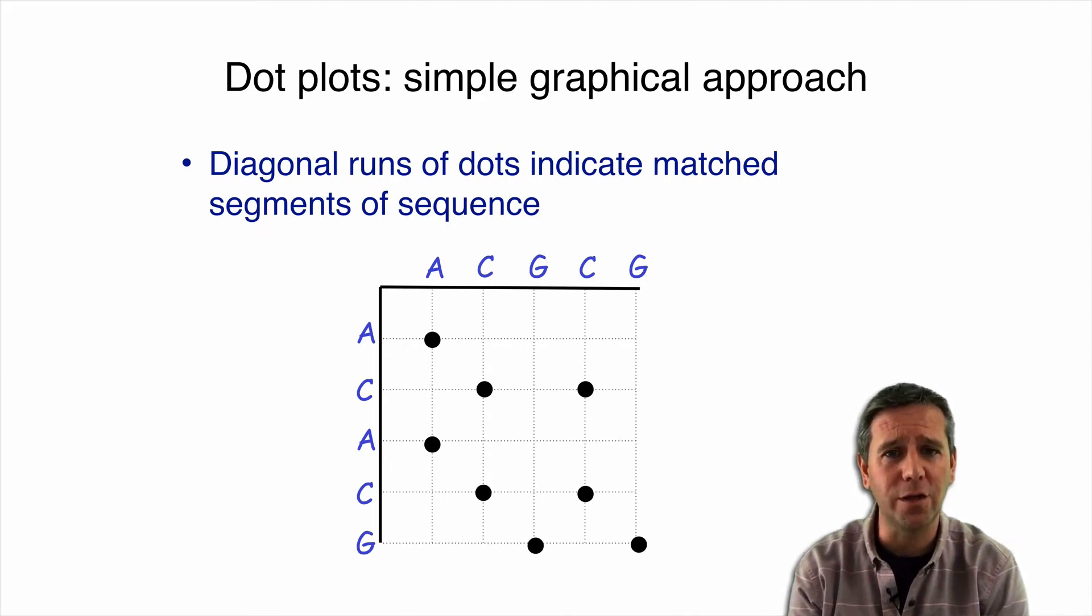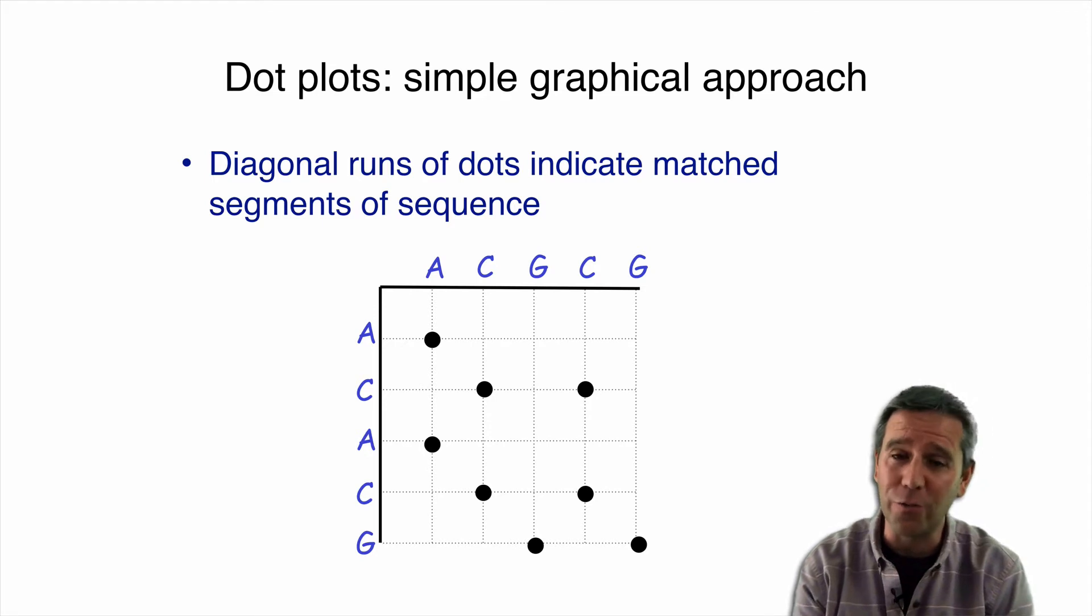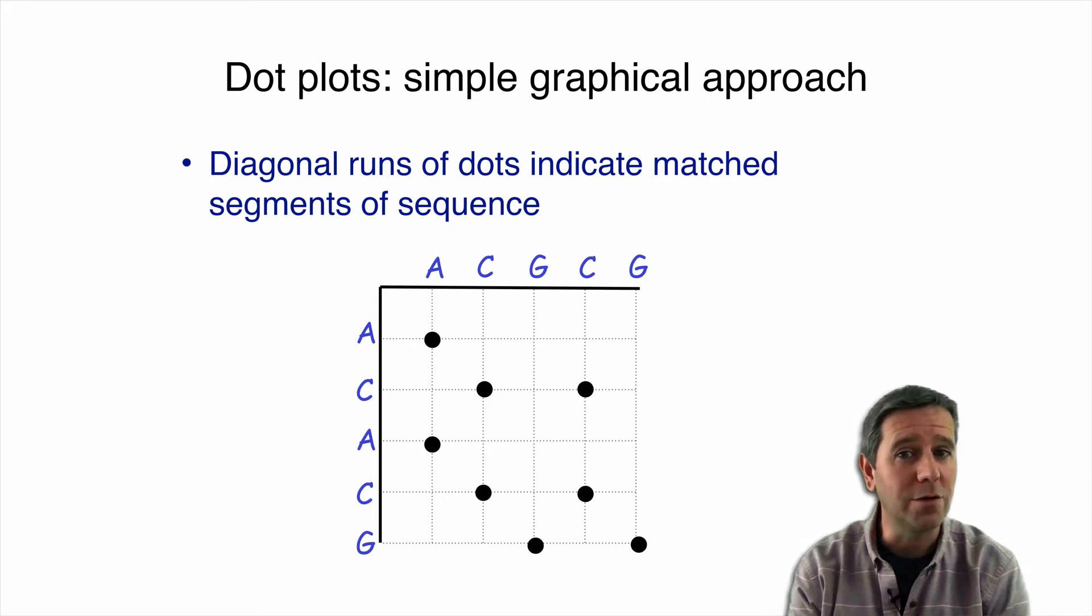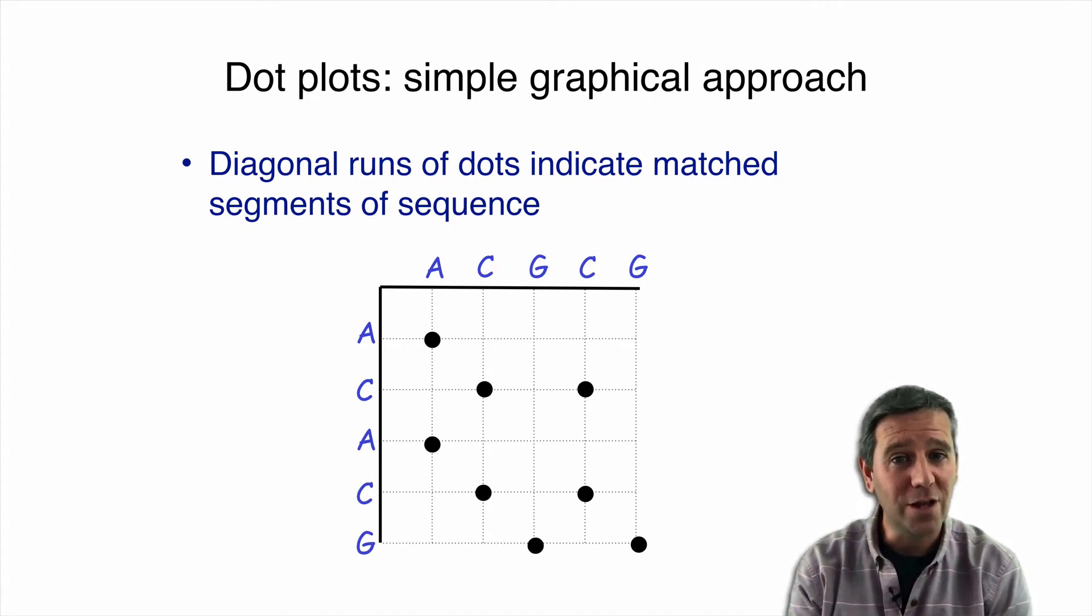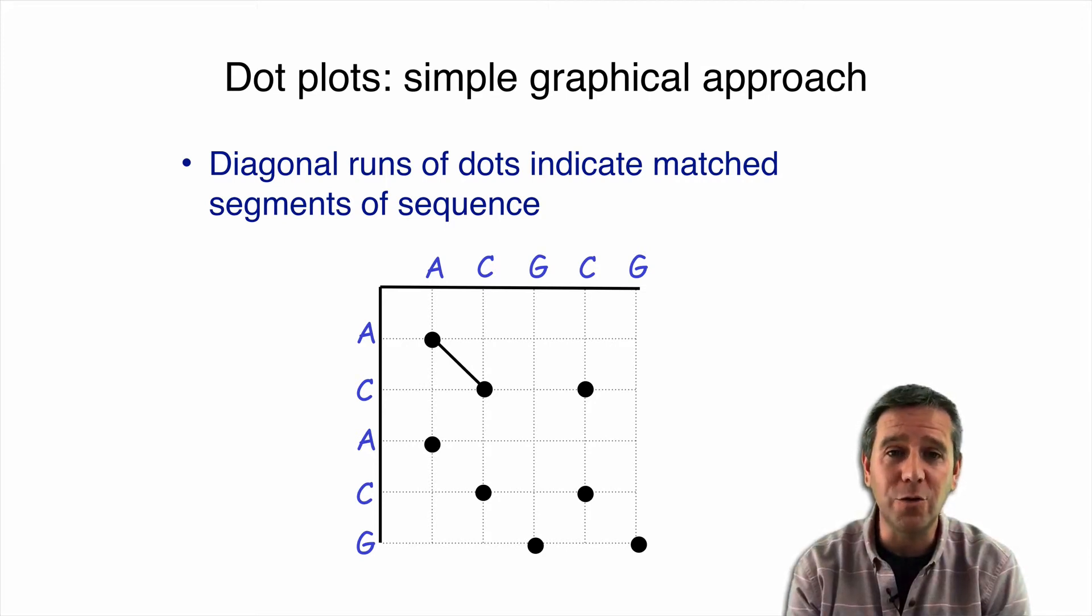Now diagonal runs of consecutive dots, that means one dot after another that go diagonally down from one corner to the bottom corner here, indicate matched segments of sequence. That's because it indicates that one character followed by another character match in sequential order in the two sequences. So like here, for example, we have an A and a C that follow each other, and they're the same in both the sequences, the one on the horizontal and the one on the vertical axis of our little table here.